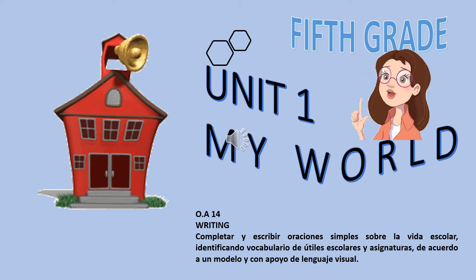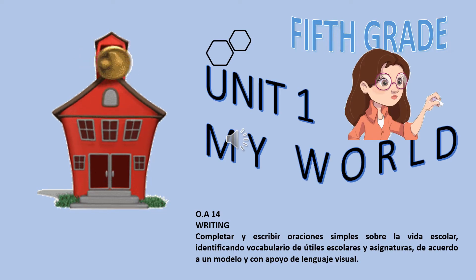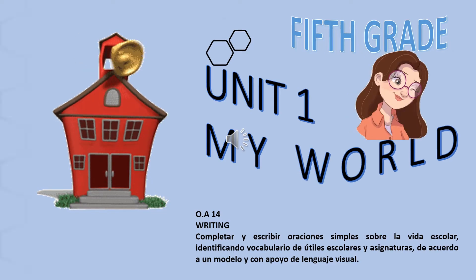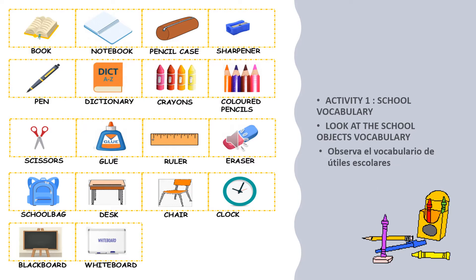La habilidad a seguir hoy día es la escritura. Activity 1: School Vocabulary. Look at School Object Vocabulary. Observa el vocabulario de los útiles escolares.